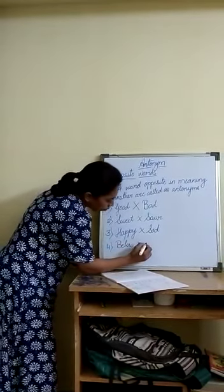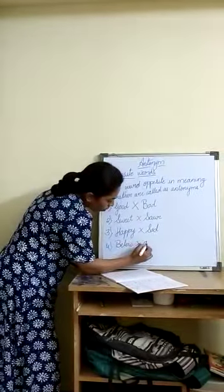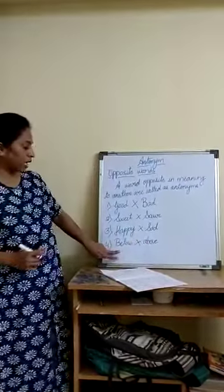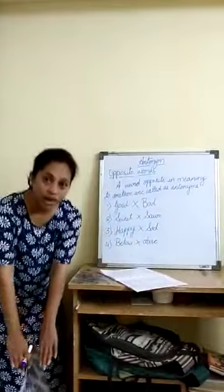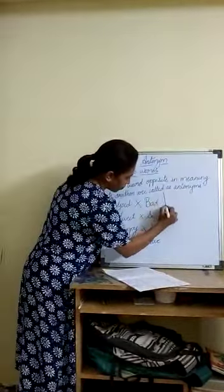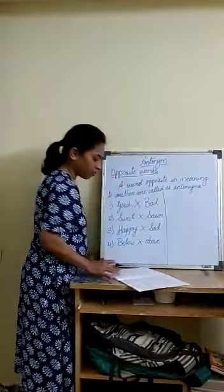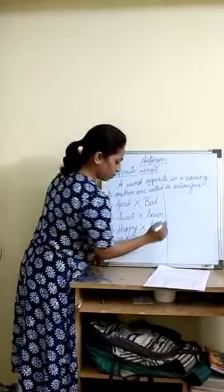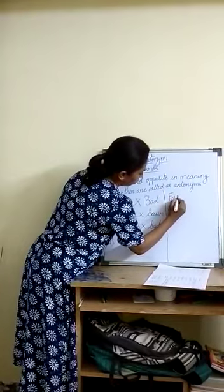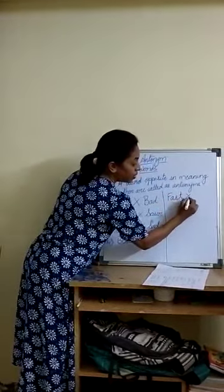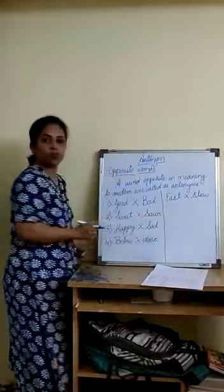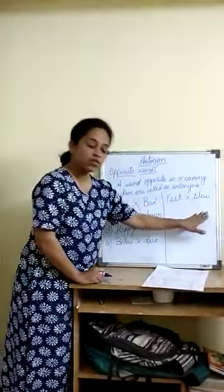Next is 'below' — and the opposite is 'above'. Below and above. Next is 'fast' — and the opposite is 'slow'. Fast and slow.